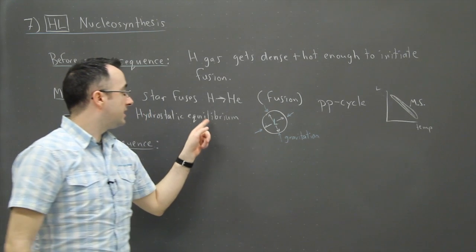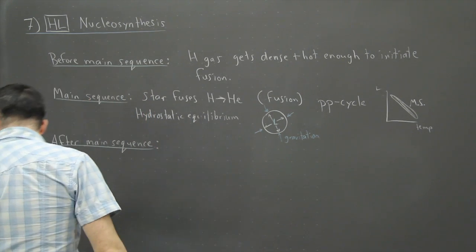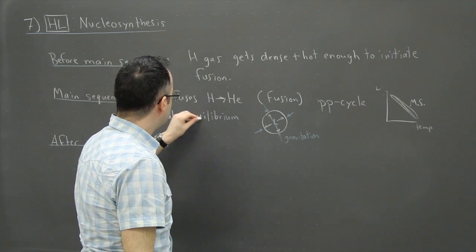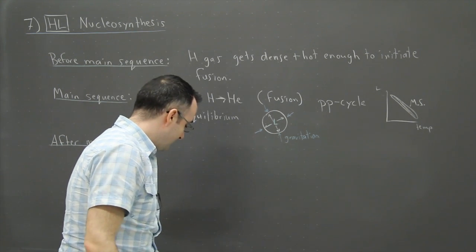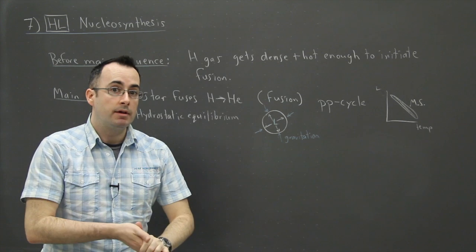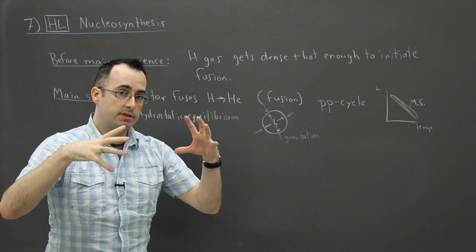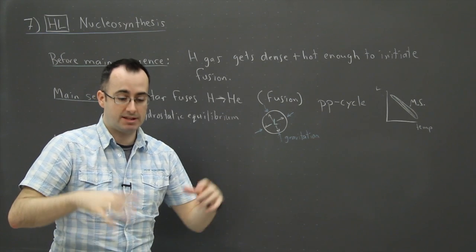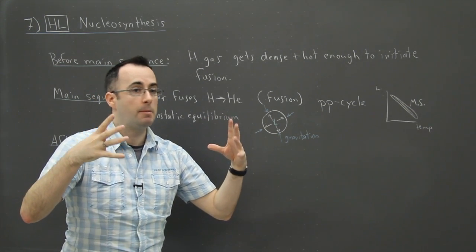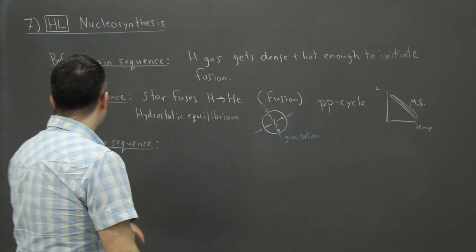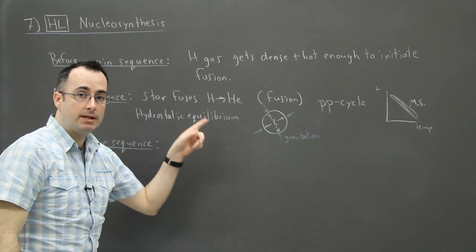So you have this gravitational force going in. And when it's in hydrostatic equilibrium, what this means is that it's nice and happy. The outwards forces are equal to the inwards forces. And so as a result, it's stable. It's sitting there happily burning away. It's burning hydrogen to helium. So that's what goes on during the main sequence.